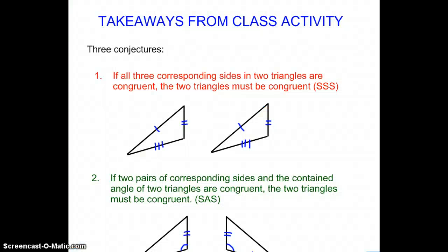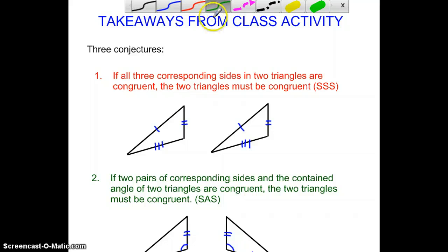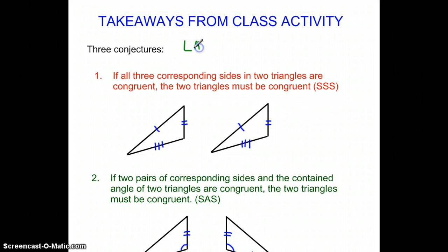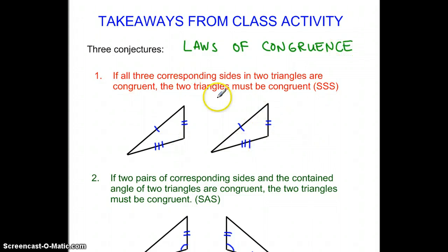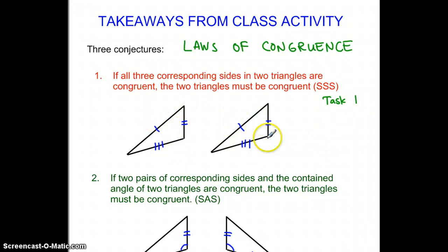What I'm hoping you were able to see from the work you did in class today — you were asked to make three conjectures, and these would be called the laws or rules of congruence. The first one, which relates to task one, was that if all three sides are the same on two triangles, they have to be the same.